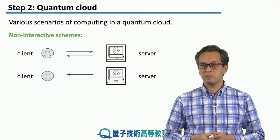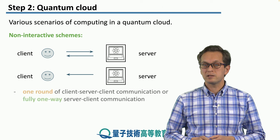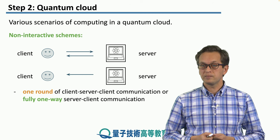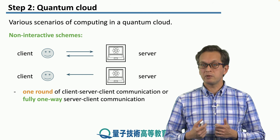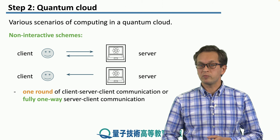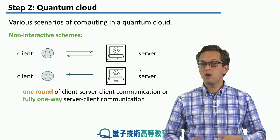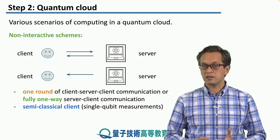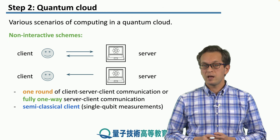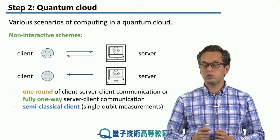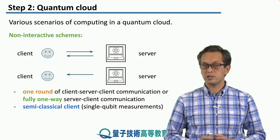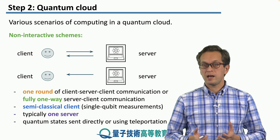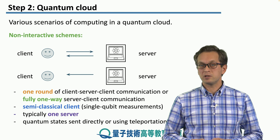A different scheme is the non-interactive scheme. This is where the client engages in only one round of communication between the client and the server, and then the server sends the reply back to the client. Or it can be fully one-way, where the server performs some operation and then sends the information back to the client, who then processes this information. In these schemes, the client is semi-classical — namely, the client has the ability to perform single qubit measurements. And again, typically there is only one server, and the quantum states can be sent either directly or using quantum teleportation.